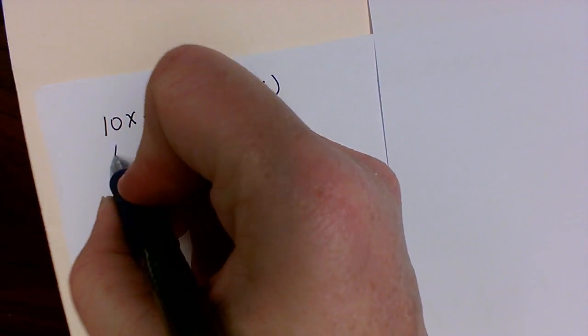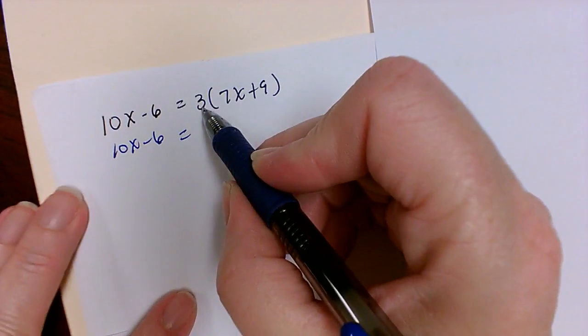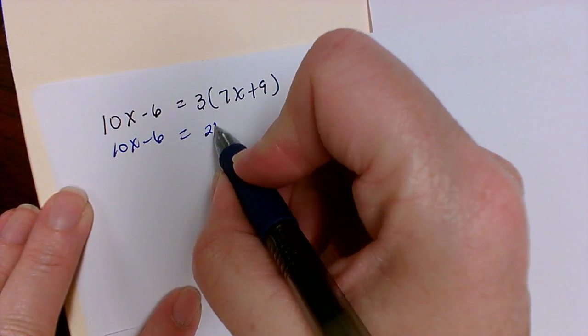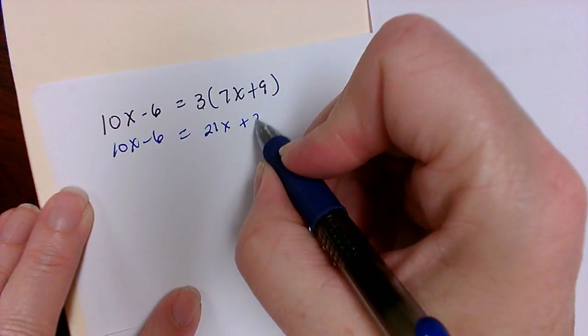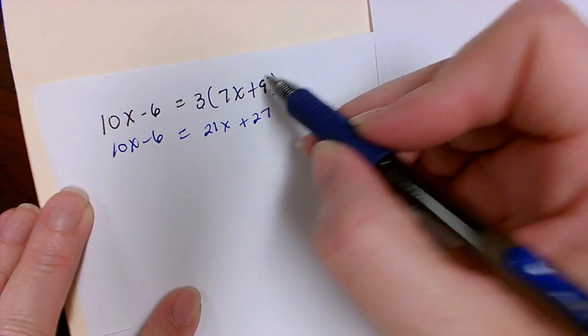So we're just going to bring this side down, and 3 times 7x will get us 21x, and 3 times 9 will get us 27. Remember, you have to distribute to both parts.